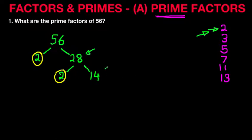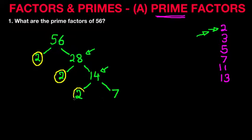We are left now with number 14. Again, starting with the smallest prime number — is 14 divisible by 2? The answer is yes because 14 is an even number. So we write down 2 over here, and what is left? 14 divided by 2 is 7. Now 7 is also a prime number, so we cannot divide that any further.